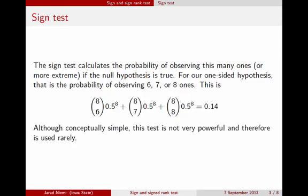So this sign test is conceptually very simple. It's just looking at coin flips, and under the null you'd expect those to have a probability of 50-50, and under the alternative it should be something different. This test is conceptually pretty simple, but it's not very powerful and therefore it's rarely used.